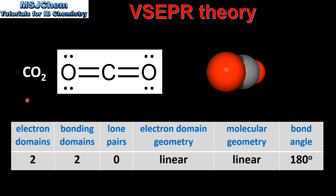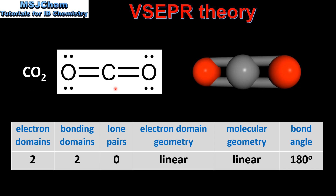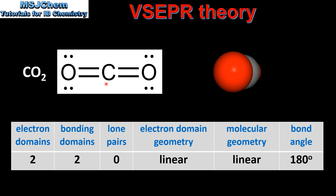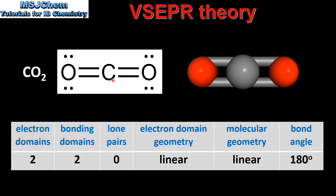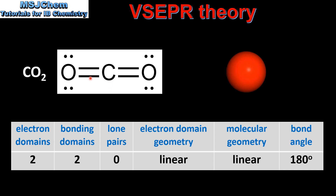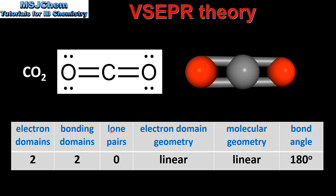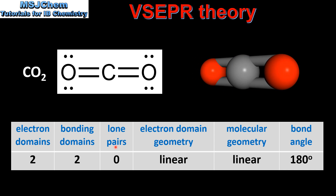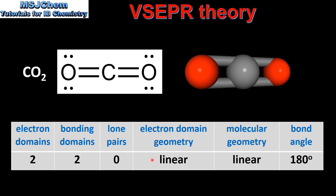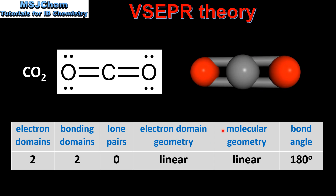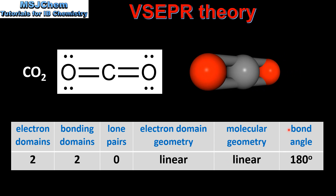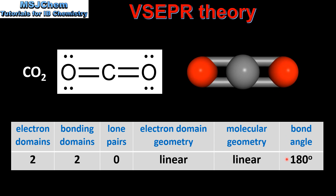And finally we have carbon dioxide. Here we have the Lewis structure for carbon dioxide. It has 2 electron domains around the central carbon atom, which are both bonding domains, and 0 lone pairs of electrons. The electron domain geometry is linear, the molecular geometry is also linear, and the bond angle is 180 degrees.